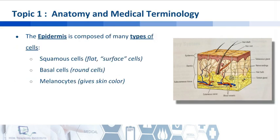The epidermis on its own is composed of many types of cells. You have squamous cells, which are the flat cells found at the surface. You have your basal cells, which are rounded. And you also have interspersed within them your melanocytes, which are your cells that give your skin its color.